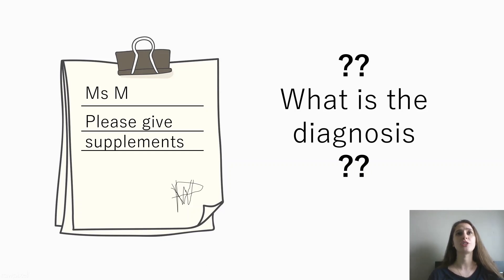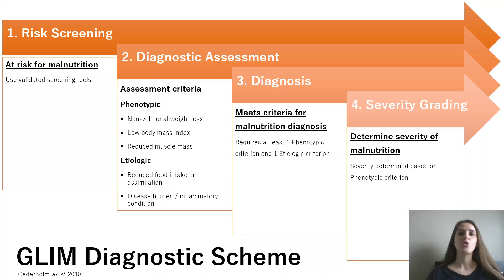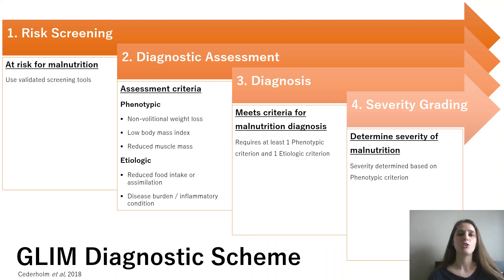Today's video is going to focus on the malnutrition diagnosis — we're not going to touch on the intervention. Recall the GLIM diagnostic scheme from my previous video, which shows the different levels used to diagnose a patient for malnutrition: first we do the risk screening, then the diagnostic assessment, then the diagnosis, and lastly the severity grading.